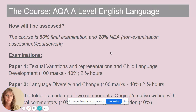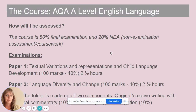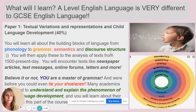At Blackpool Sixth Form College. As with most linear A-level courses, it's 80% final examination and 20% non-examination assessment, or coursework. There are two exams, both two and a half hours long, and your coursework folder is made up of two components: one part is an original or creative writing with an accompanying commentary, and the other is a language investigation. They're worth 10% each.